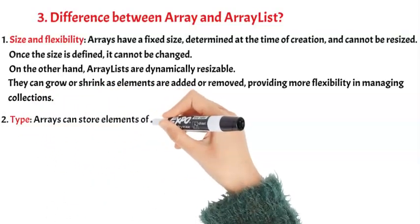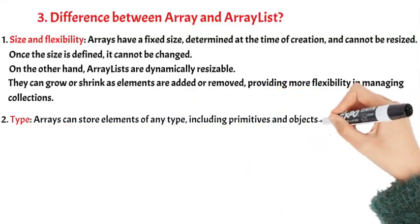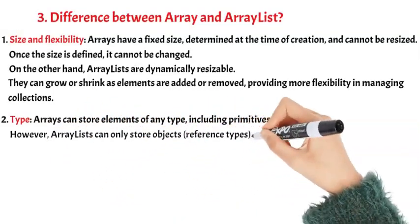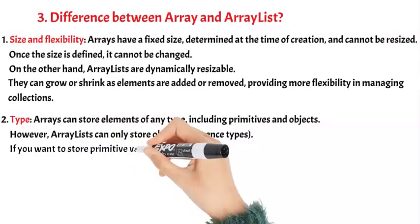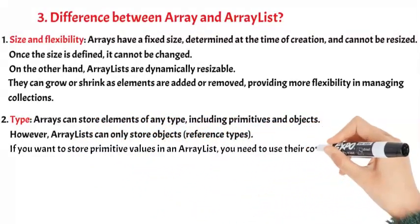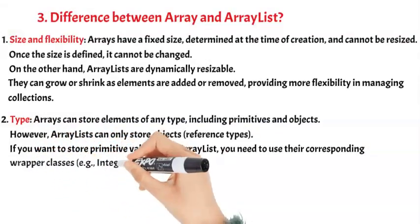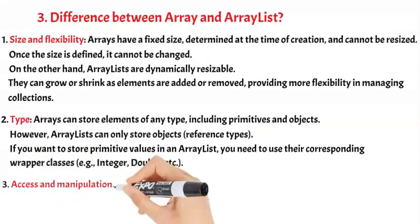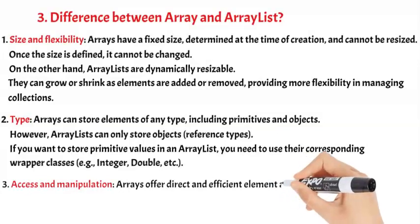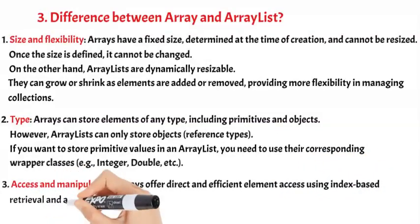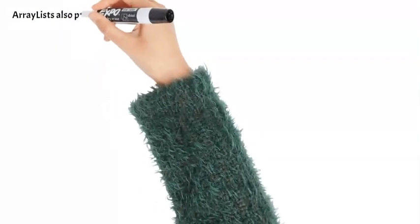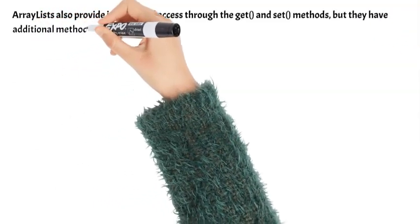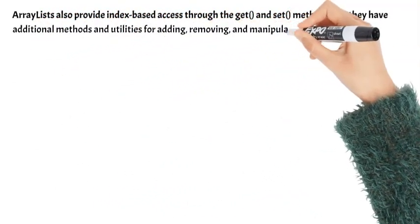Difference 2: Type — Arrays can store elements of any type, including primitives and objects. However, ArrayLists can only store object reference types. If you want to store primitive values in an ArrayList, you need to use their corresponding wrapper classes, e.g., Integer, Double, etc. Difference 3: Access and Manipulation — Arrays offer direct and efficient element access using index-based retrieval and assignment. ArrayLists also provide index-based access through the get and set methods, but have additional methods for adding, removing, and manipulating elements.